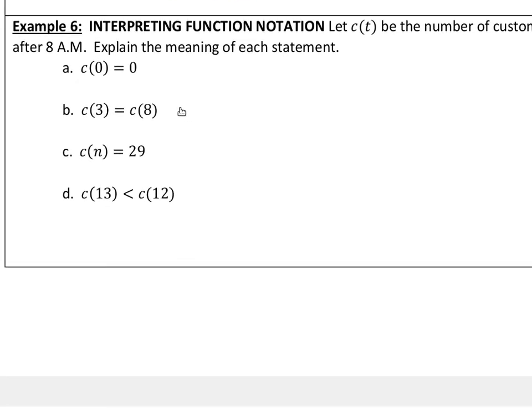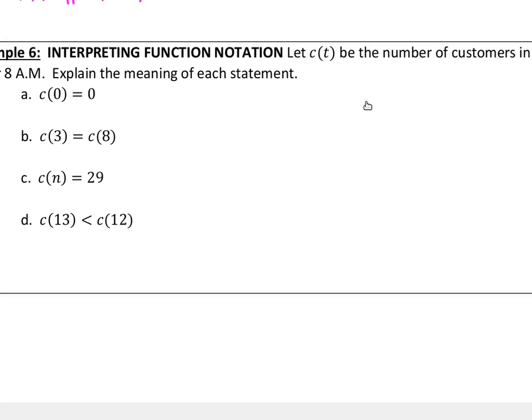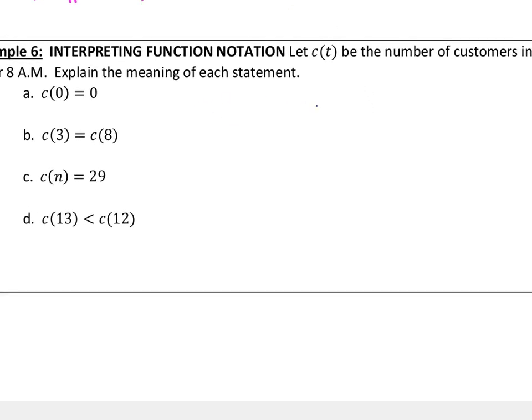Example six. Here's another one of that type. Let C of T be the number of customers in a restaurant, T hours after 8 a.m. So, I'm just going to jot this down here. C of T is our output. It's the number of customers. Our input, T, is the hours after 8 a.m. So, letter A, again, this is the one that you're going to have to be familiar with for your test.